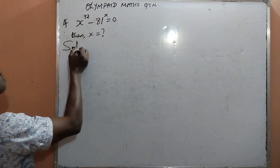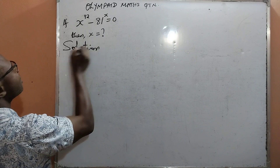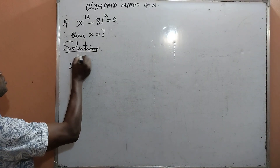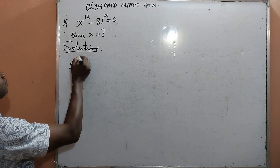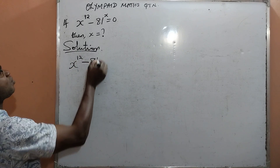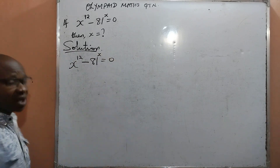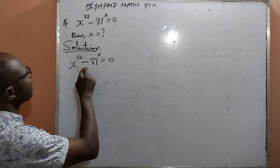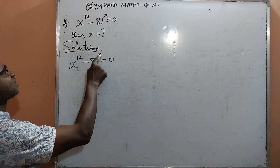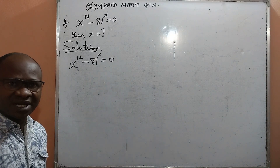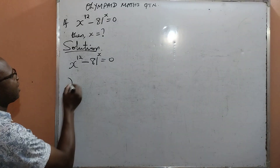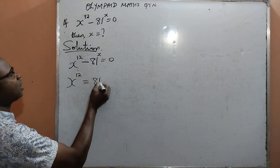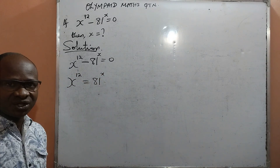Solution: given is x raised to the power 12 minus 81 raised to the power x equal to 0. First and foremost, I will move minus 81 raised to the power x from the left-hand side to the right-hand side to get x raised to the power 12 equal to 81 raised to the power x.